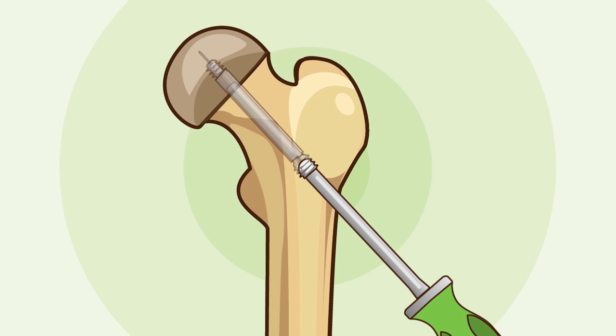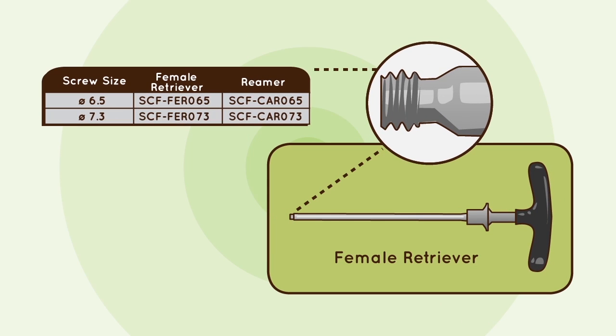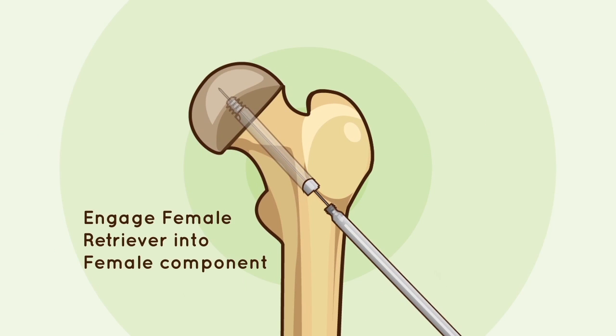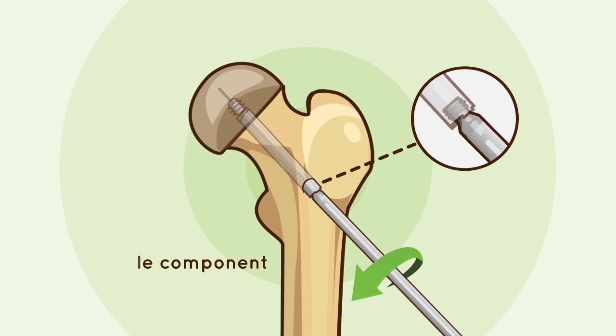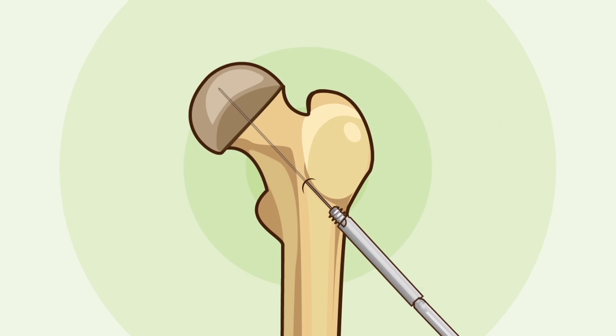Female component removal: Engage the female retriever corresponding to the implant size into the female component. Using a counterclockwise rotation, rotate while applying traction to remove the implant component.